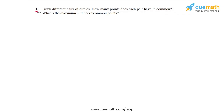In question 1, the problem statement says: draw different pairs of circles. How many points does each pair have in common? And what is the maximum number of common points? I'm going to show you a simulation to help you visualize this.